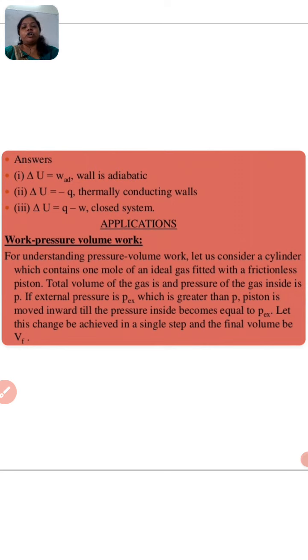Now, the applications: pressure volume work. For understanding pressure volume work, let us consider a cylinder which contains one mole of an ideal gas fitted with a frictionless piston. Total volume of the gas is V, the pressure of the gas inside is p. If external pressure is p_ex, which is greater than p, the piston is moved inward till the pressure inside becomes equal to p_ex. Let this change be achieved in a single step and the final volume will be v_f. To understand work, pressure, and volume work, we need to study a cylinder in which ideal gas is filled, and the friction applied is a frictionless piston. In this condition, the external pressure value will be p_ex.